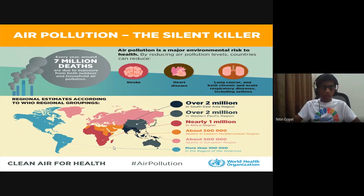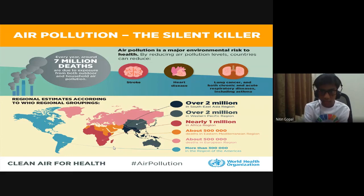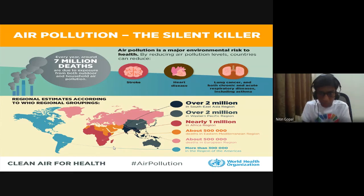Air pollution — this chart represents air pollution, which is the silent killer. Every year, around 7 million deaths are due to exposure from both outdoor and household air pollution, which causes stroke, heart disease, lung cancer, etc. Over 2 million deaths have occurred in the Southeast Asia region, over 2 million in the Western Pacific region, nearly 1 million in the African region, about 500,000 in the Eastern Mediterranean region, about 500,000 in the European region, and more than 300,000 in the Americas region.